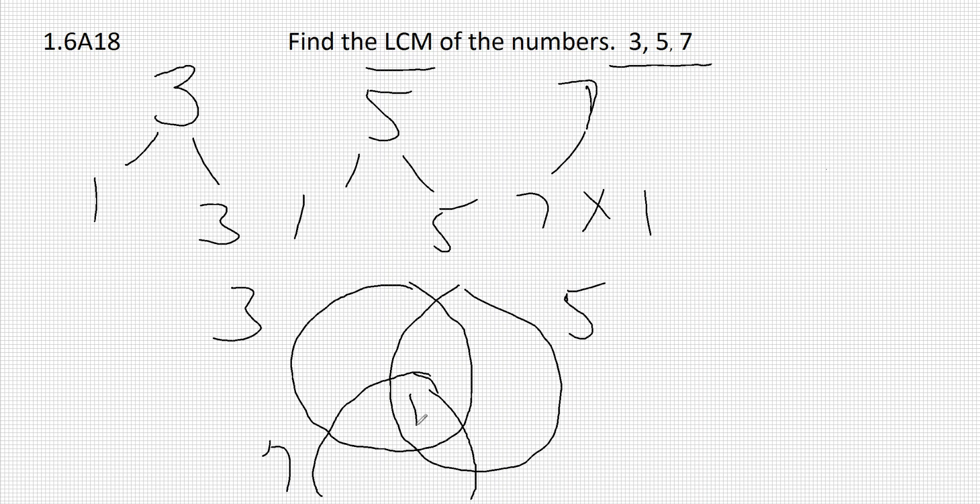The only thing that's going to be in the middle is 1. Other than that, nothing else is in common. We have the 3 there, the 5 there, and the 7 there.